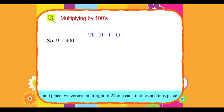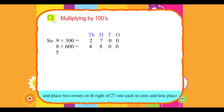So, 9 into 300 equals 2700. 8 into 600 equals 4800. 5 into 500 equals 2500.